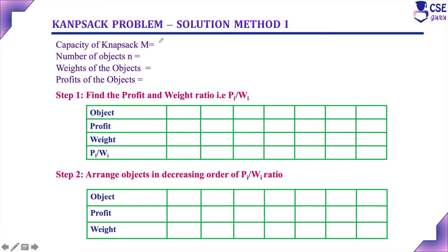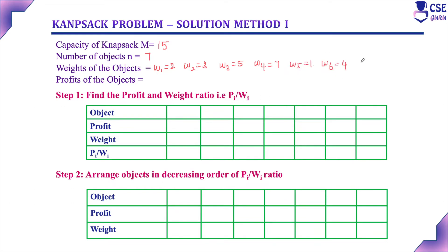The capacity of the knapsack is 15, and the number of objects is 7. The corresponding weights are: W1=2, W2=3, W3=5, W4=7, W5=1, W6=4, and W7=1. The profits are: P1=10, P2=5, P3=15, P4=7, P5=6, P6=18, and P7=3.